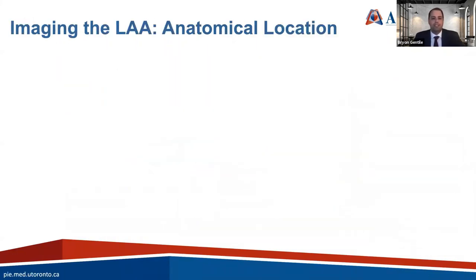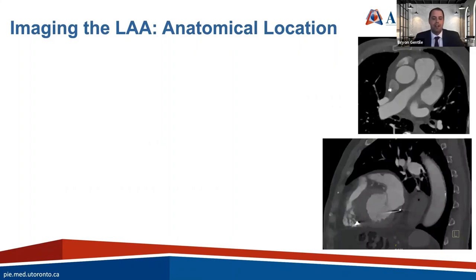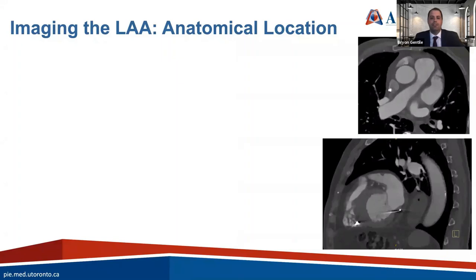The most appropriate place to start is imaging the left atrial appendage itself, thinking about its anatomic location. The ostium of the left atrial appendage is a posterior structure — surgeons approaching it to over-sew or close it are dealing with the ostium. As echocardiographers screening for thrombus, we're often looking at the tip, the apex, and the body of the left atrial appendage, which is an anterior structure out near the main pulmonary artery.